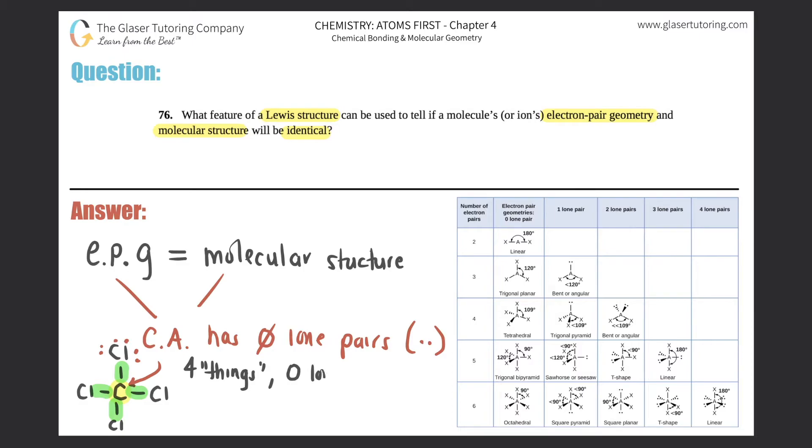So zero lone pairs, no dots here—I don't see any dots around carbon. The number of electron pairs represents the total amount of things that the central atom has, whether you have two things around the central atom or three or four or five or six. That's how you know what row you're going to be in—you look at how many total things are going on, and that's what this represents. Now, zero lone pairs would tell us we have four total things, zero lone pairs. This molecular structure will be tetrahedral.